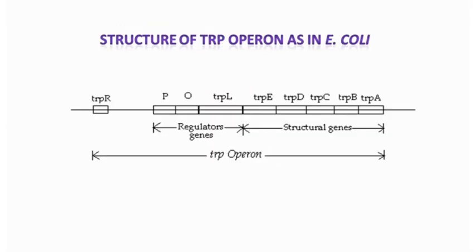Here is the structure of the trp operon in Escherichia coli. It comprises five genes: trpE, trpD, trpC, trpB, and trpA, with a single promoter and operator region. Between the operator and trpE there is a segment called the leader sequence or trpL — a regulatory element before the structural genes. There is another regulatory gene called trpR, present farther away from the actual trp operon. This gene synthesizes a repressor, which is normally an aporepressor — an inactive repressor. We will see how the trp operon functions under low and high concentrations of tryptophan in the cell.